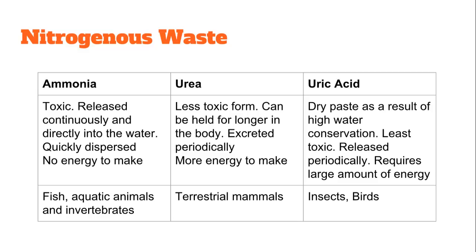Looking at the differences between ammonia, urea, and uric acid: ammonia is quite toxic but can be released continuously and directly into water by aquatic organisms. It quickly disperses in the water and doesn't take any energy to make. This is where we typically see fish and some aquatic animals and invertebrates excreting their nitrogenous waste.